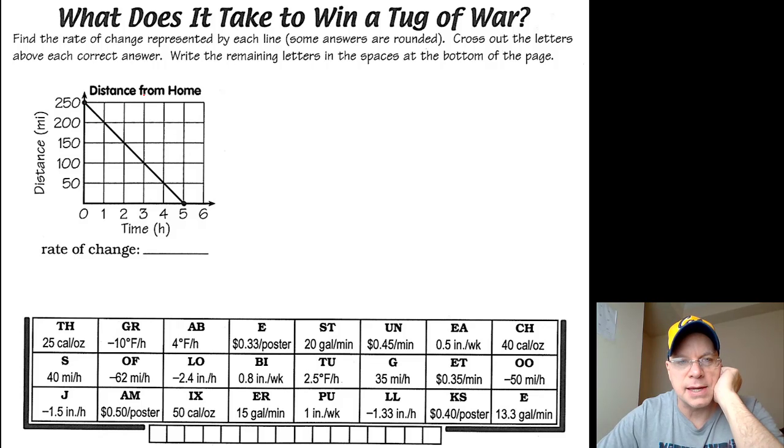The story that this graph is telling me is that if it's distance from home, when I start the clock at zero hours, I'm 250 miles from my home. Five hours later, I'm zero miles from my home, which means I'm home.